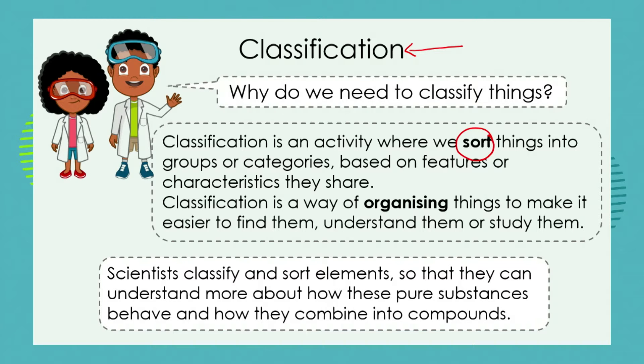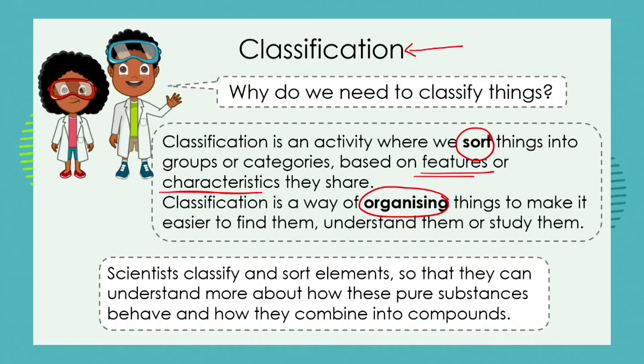Shop owners make our lives as shoppers a lot easier because they sort and organize things on their shelves. We sort things based on their features or characteristics that they share. So we put bread together with bread rolls and other baked goods. We put milk together with yogurt and other dairy products like butter that need to be kept cool. This idea of sorting or classifying helps us to organize things.